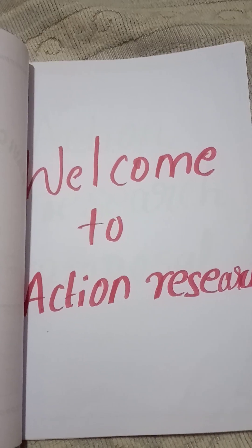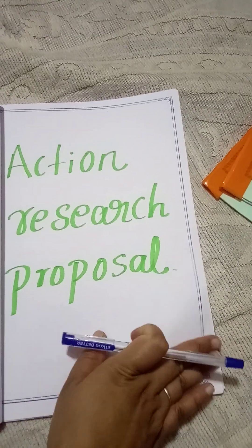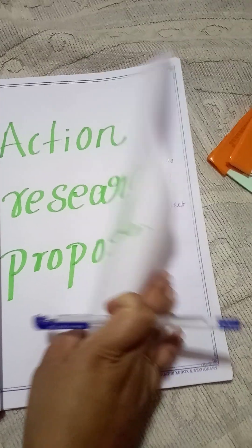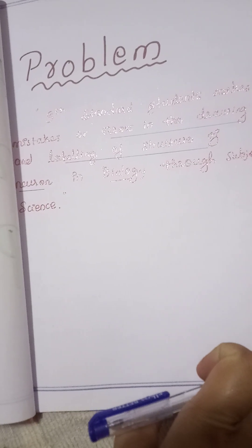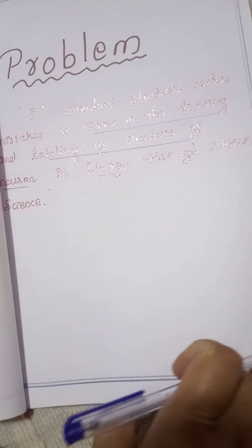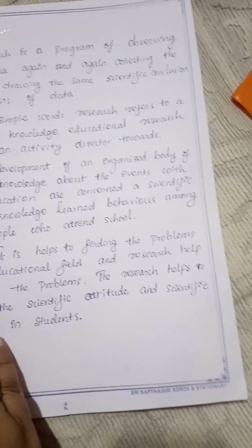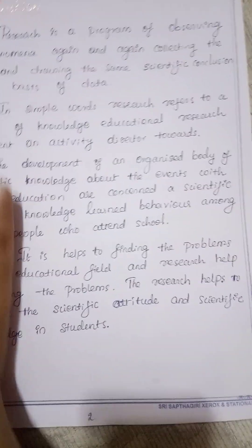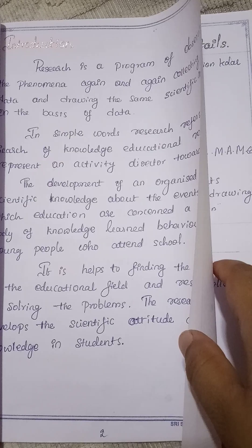Hi everyone, today in this video we are going to discuss about an action research proposal. This is a pre-internship program done by teachers during school visits. I have taken the problem that ninth standard students make mistakes or errors in drawing and labeling the structure of a neuron in Biology through the subject Science. In this action research, we have an introduction section covering what we are proposing and how we are doing it.